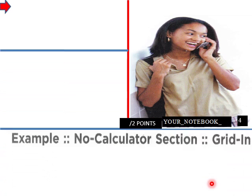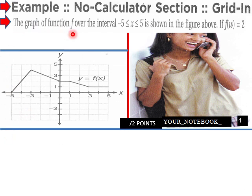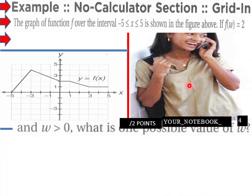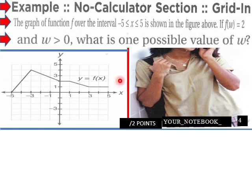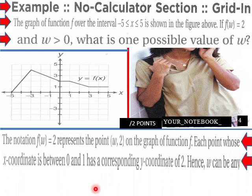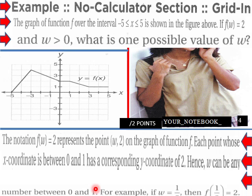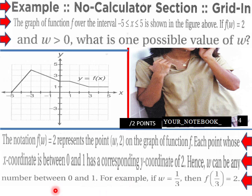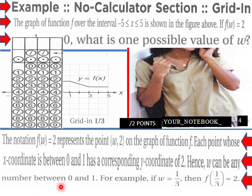Page 4 now, example, no calc section, grid in. The graph of the function f over the interval -5 ≤ x ≤ 5 is shown in the figure here. If f(w) equals 2 and w is greater than 1, what is one possible value of w? The notation f(w) = 2 represents point (w, 2) on the graph. Each point whose x-coordinate is between 0 and 1 has a corresponding y-coordinate of 2. Hence w can be any number between 0 and 1. So you grid in 1/3, and it would be correct, 1 divided by 3.